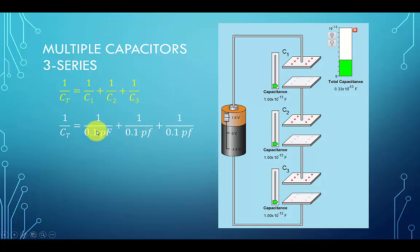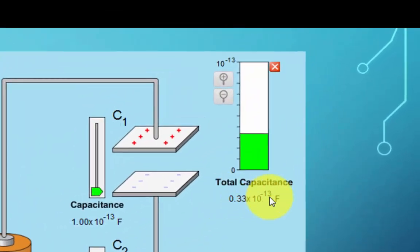Substituting the values one more time, we get 1 over Ct equals 3e to the 13th. Taking the reciprocal one more time, we have Ct equals 0.033 picofarads, which is the same result showing the total capacitance on this diagram.